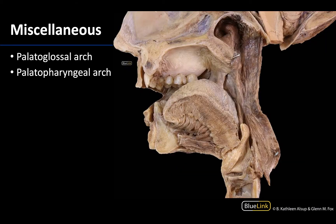Two more arches: this right here will be the palatoglossal arch, and over here we will have the palatopharyngeal arch. The palatoglossus is going to be between the soft palate and the tongue, and the palatopharyngeal arch will be between the soft palate and the pharynx. The uvula has been reflected superiorly to get a better view of the palatopharyngeal arch. The space in between is going to be referred to as the tonsillar fossa, which may house a palatine tonsil, which you can see right here. The palatoglossal arch also forms a boundary of the oropharynx. These arches cover muscles: the palatoglossal arch is formed by the palatoglossus, and the palatopharyngeal arch by the palatopharyngeus muscle.